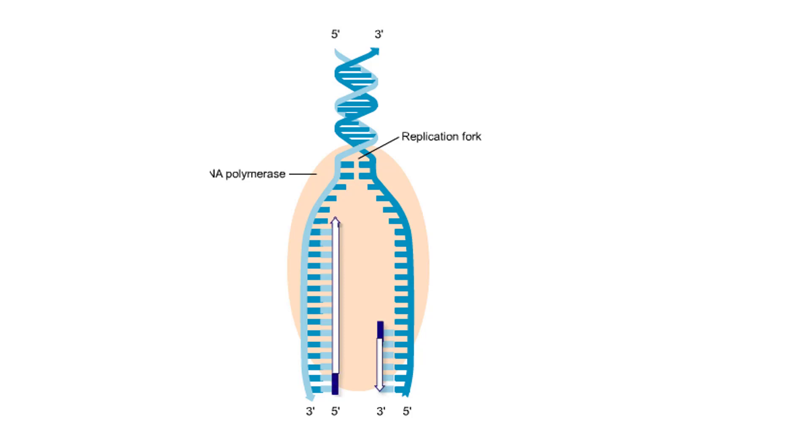In contrast, the strand being made in the opposite direction of the replication fork must be synthesized discontinuously in short fragments, because DNA polymerase can only synthesize DNA in the 5' to 3' direction.